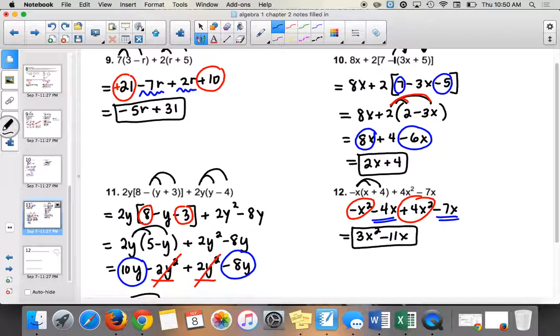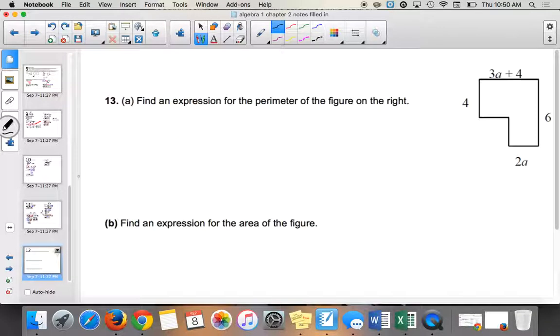So remember that if you have a negative x squared, that's really the same as negative 1x squared. All right. And the last little bit we have, it says find an expression for the perimeter of the figure on the right. So if you're finding the perimeter of something, what do you do to find the perimeter?